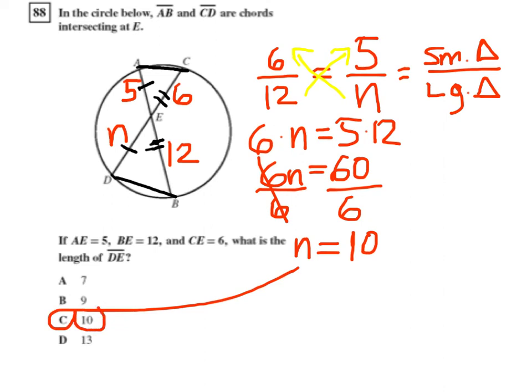You could also have set up the proportions differently. Instead of setting the long side of one triangle to the long side of the other triangle, you could set it as 6 is to 5, so both sides of the small triangle, in comparison to 12 is to N, with 12 and N both being sides of the larger triangle. You'll notice when you cross multiply, you'll end up with the same equation that we had in the previous problem.